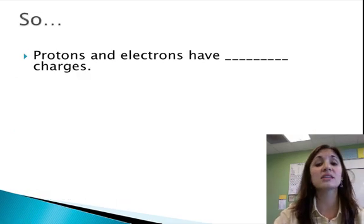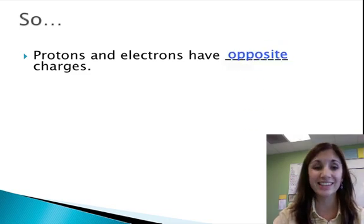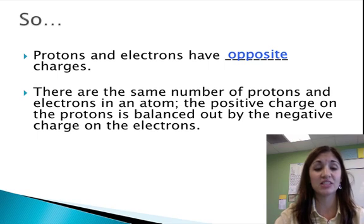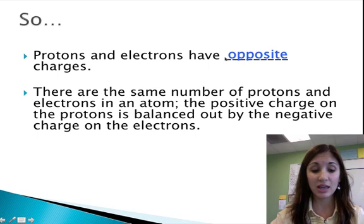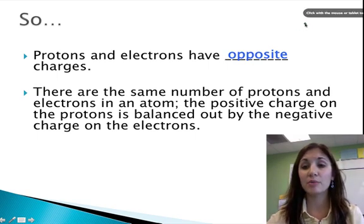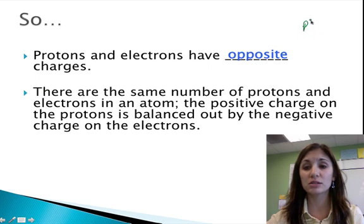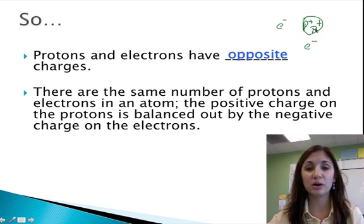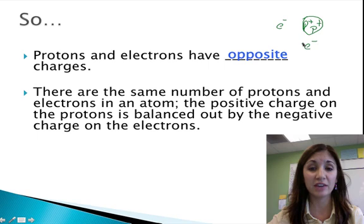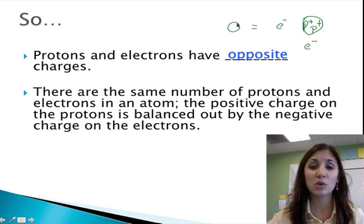So protons and electrons have opposite charges, and we know that opposites attract. So the positive charges in the nucleus balance out the negative charges in a neutral atom. So if in a nucleus I were to have two protons, then to make this a neutral atom, I would need to balance it out with two electrons surrounding the nucleus. So the total charge on an atom like this would be zero.